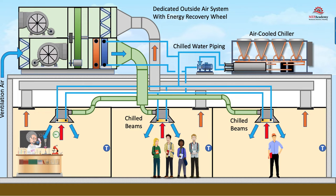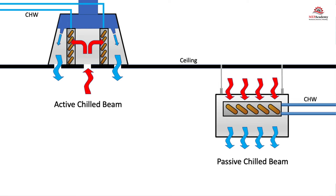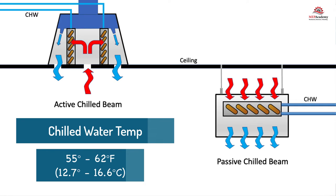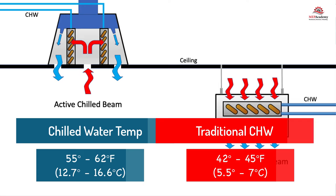If the level of humidity is not properly managed by the AHU, then condensation can occur on the chilled beams and water could drip on the space below. The chilled water temperature to a chilled beam is in the range of 55 to 62 degrees Fahrenheit (12.7 to 16.6 degrees Celsius), which is higher than a traditional chilled water system of 42 to 45 degrees Fahrenheit (5.5 to 7 degrees Celsius), in order to avoid condensation.